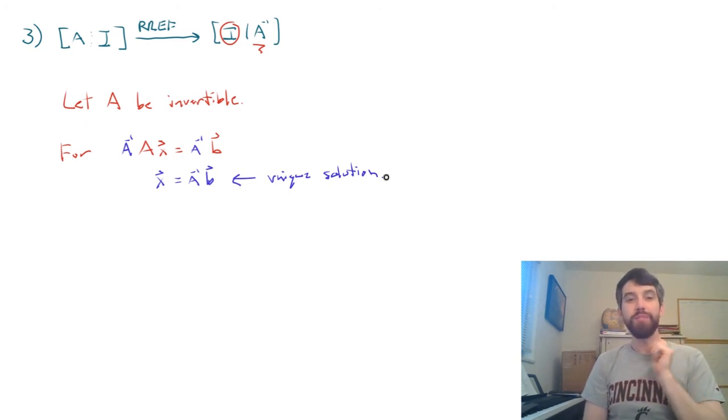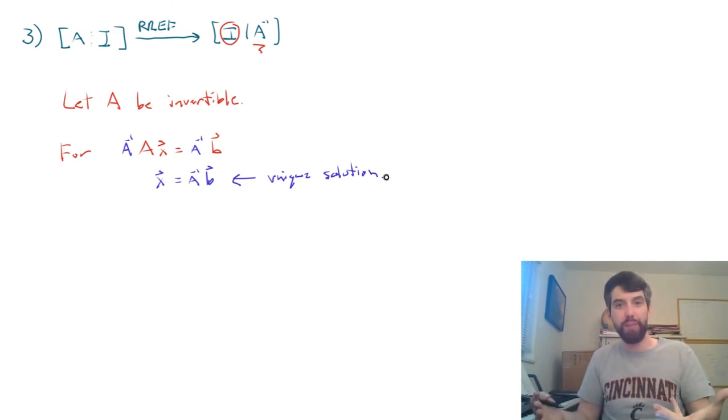If you have a unique solution to Ax equal to B, then it must be the case that you have a leading one in every single column. Or in other words, you can't have any free columns, because free columns say if there's a solution, there's infinitely many of them. So if you have a unique solution, there's a leading one in every single column.